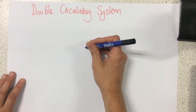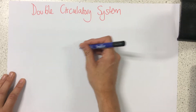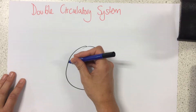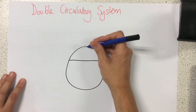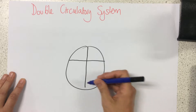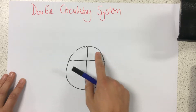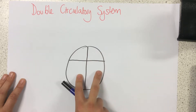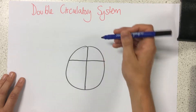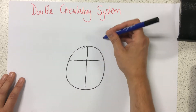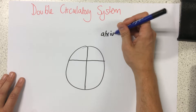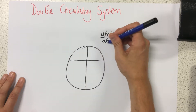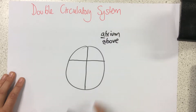One of the most important organs that we have is our heart, and I'm going to draw a simple diagram of it right now. The heart has four different chambers. The atria are above and the ventricles are below. I always remember that atrium starts with A and so does above, so remember that these are above.